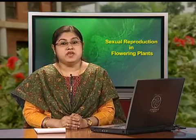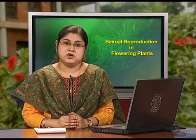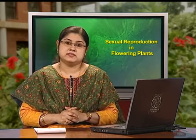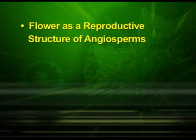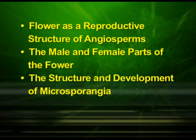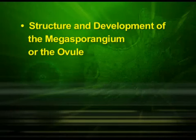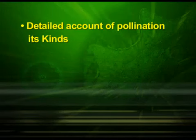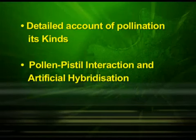We have now come to the end of this chapter on sexual reproduction in plants. In the first part of this topic, we discussed about the flower as a reproductive structure of angiosperms, the male and female parts of the flower, and the structure and development of microsporangia and the pollen grain. The second part covered the structure and development of the megasporangium or the ovule and the embryo sac along with its types. The third part covered the detailed account of pollination, its kinds, pollen-pistil interaction and artificial hybridization.